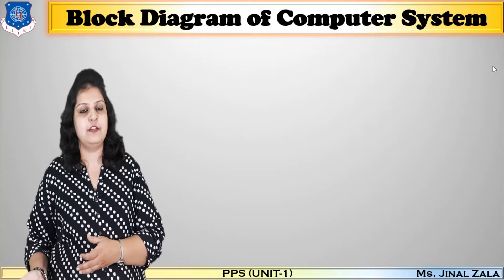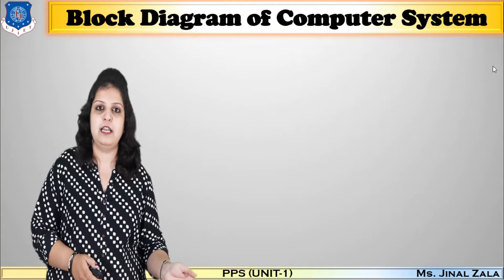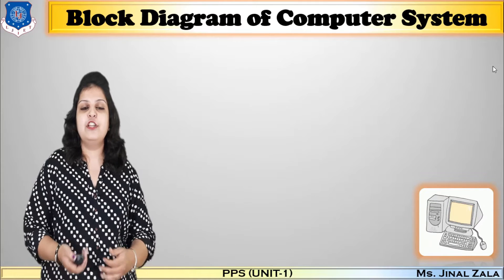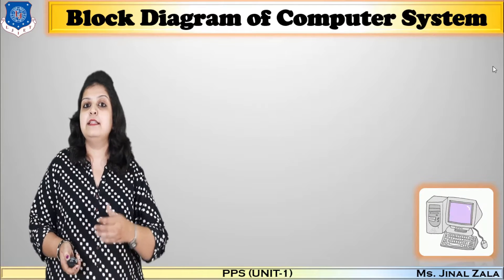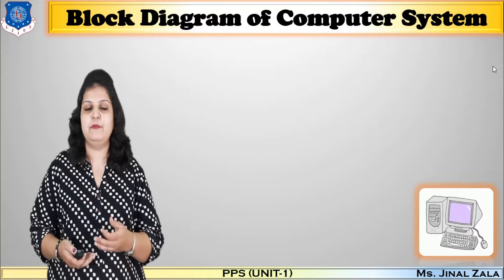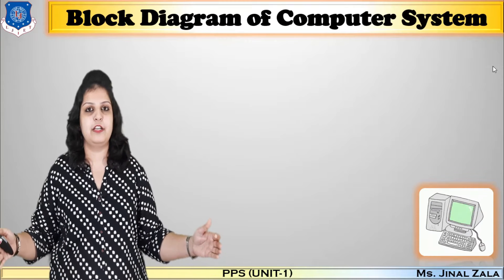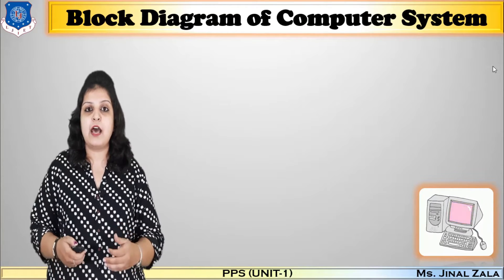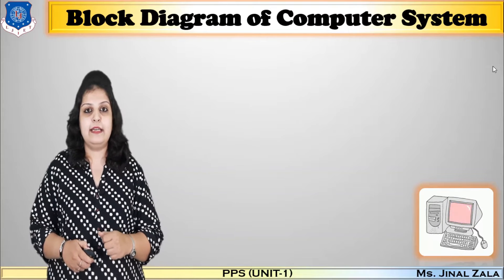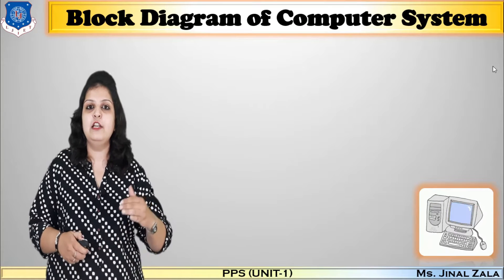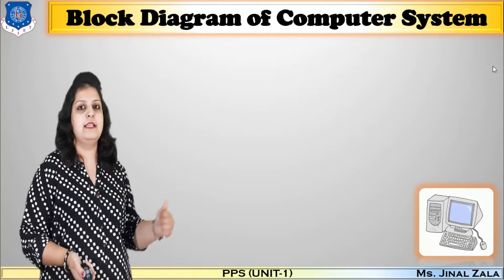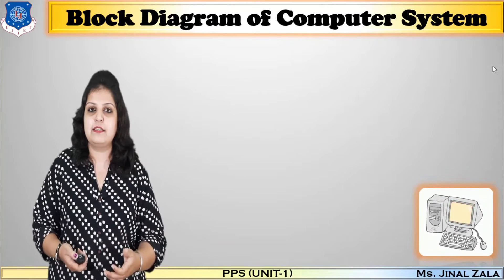First of all, what type of device is a computer? Is it an electronic device or an electrical device? Let's see the difference between electronics and electrical. Devices that run on high voltage are known as electrical devices, and devices that run on low voltage are known as electronic devices. Our computer is an electronic device.